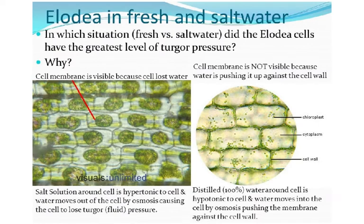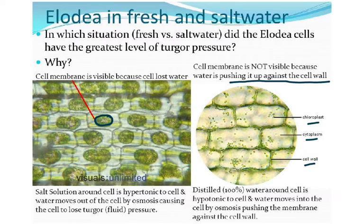Here we see Elodea in fresh and salt water. In fresh water, the cell membrane is not visible because water is pushing it against the cell wall — the cell membrane is only about five nanometers thick. In salt water, the water moves out and the cell membrane becomes visible as it encloses the contracted protoplast. The salt solution around the cell is hypertonic, so water moves out by osmosis, causing the cell to lose turgor.